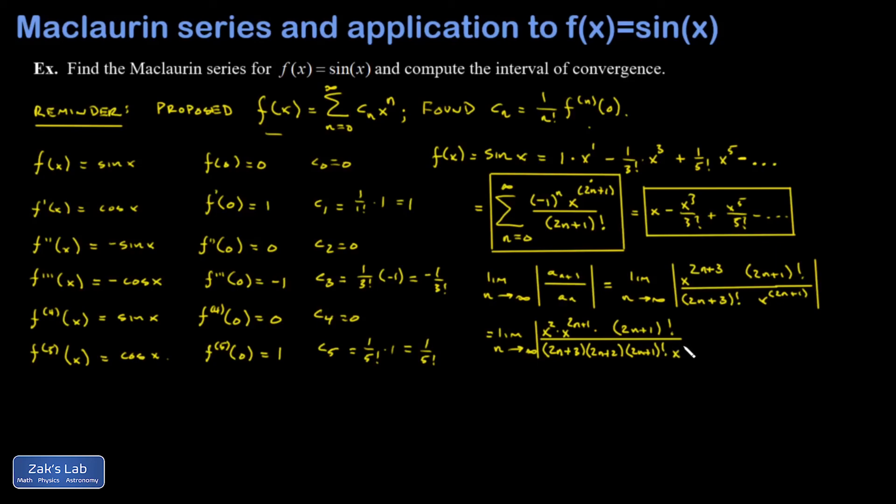And then my x term, x to the 2n plus 1. I'll leave that alone because I'm ready to cancel it out. And we cancel the 2n plus 1 factorial. In the next line, I'm going to move the x dependence out of this limit because it's an n limit. So the x is a constant with respect to the limit. And that would just give me an absolute value of x squared out in front. But I know x squared is positive. So I'm just going to write it as x squared.